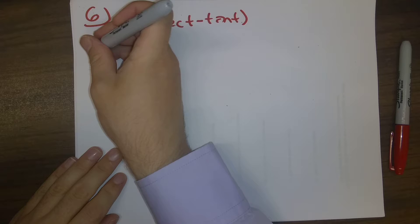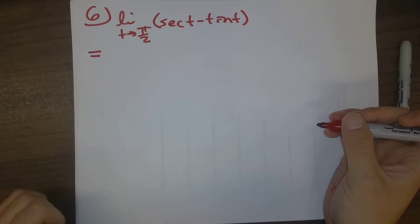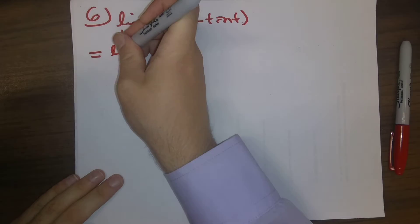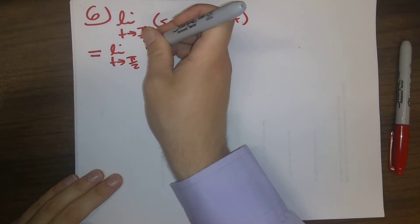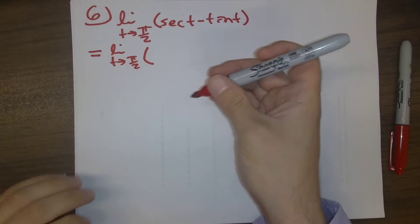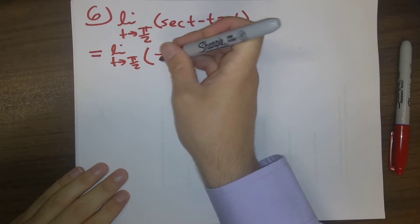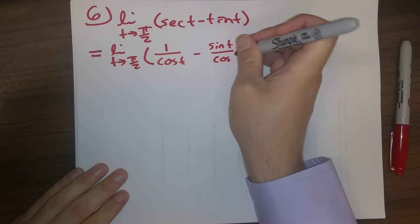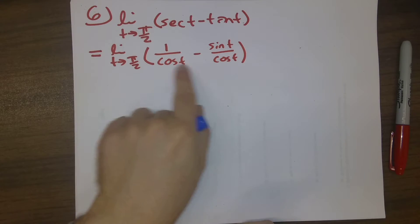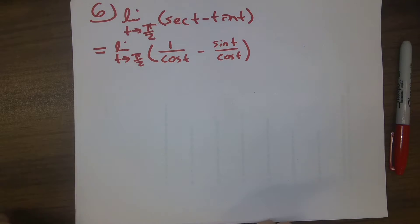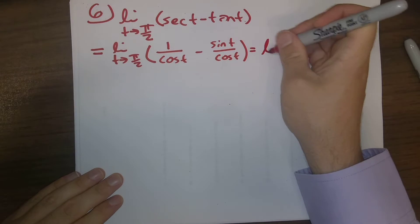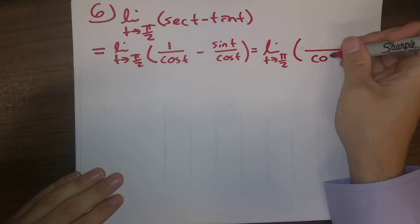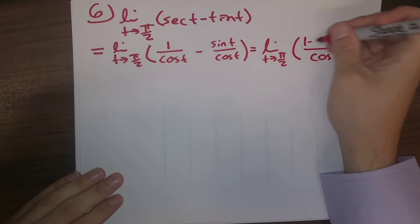We can't just cheat here. We have to crunch through everything. The best first step is to rewrite this using sines and cosines, because that's more comfortable. So secant is one over cosine, tangent is sine over cosine. And the most natural thing to do is when we have two fractions, we want to combine those together into a single fraction. So limit as t goes to pi over two of one minus sine t over cosine t.